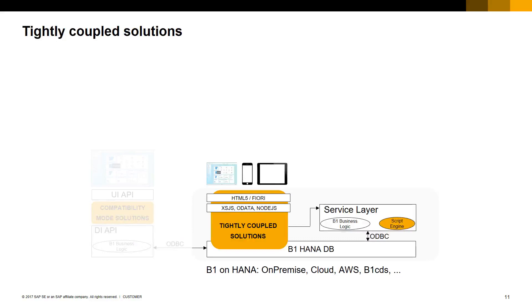The next type of extensibility option is a pure SAP HANA play, where the solution uses the SAP Business One service layer, HTML5 and FIORI for the user interface, and XSJS, Node.js, and OData for SAP Business One data manipulation. In this case, the SAP HANA code is deployed on the SAP HANA server, keeping the code close to the data. This is the second method of tightly coupled integration, because the code is deployed on and wherever the SAP HANA server is.